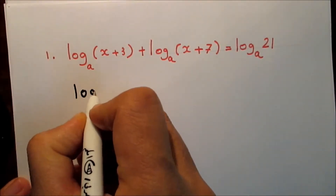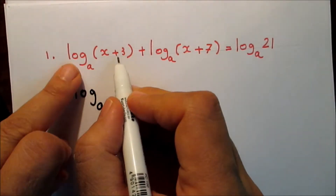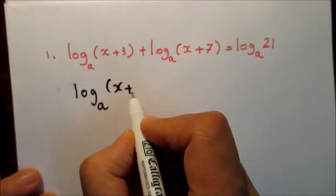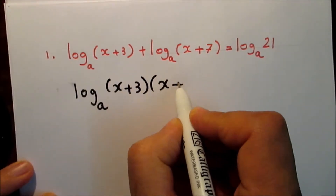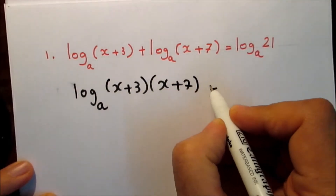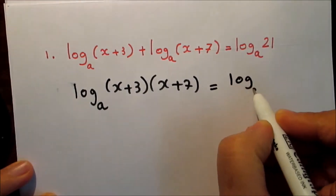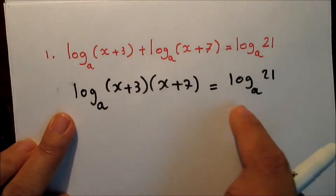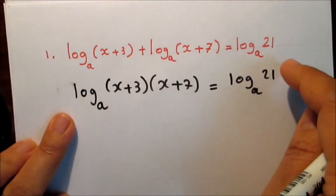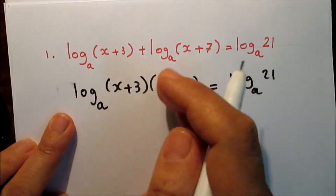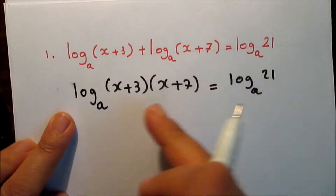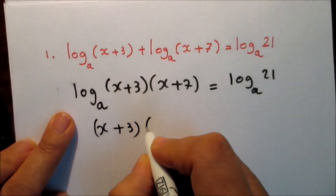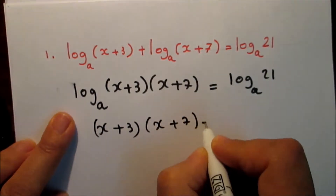So log base e of (x + 3) times (x + 7) equals log base e of 21. The log on both sides of the equation has the same base, so the numbers inside the log on both sides are equal. So this expression equals 21 — remove the log from both sides. So (x + 3) times (x + 7) equals 21.